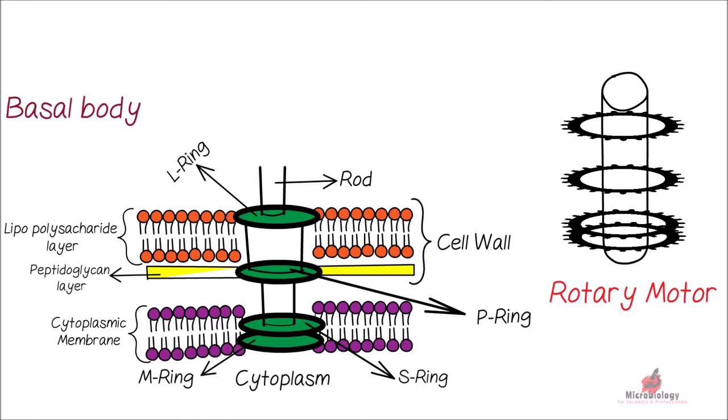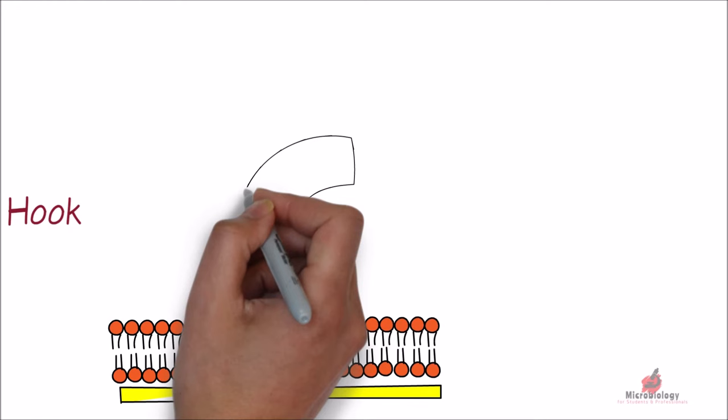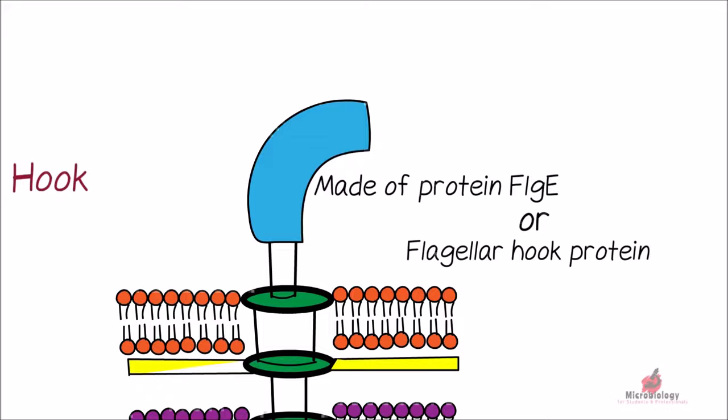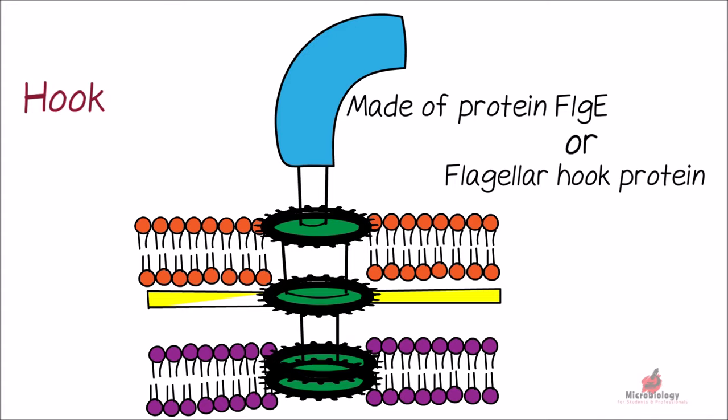Hook is the short and curved structure that connects basal body and filament. Hook is made up of multiple copies of single protein called FlgE, or also called as flagellar hook protein. The main function of Hook is to transmit the torque generated by the basal body by the rotary motion to the filament.